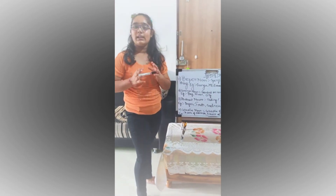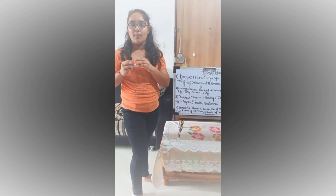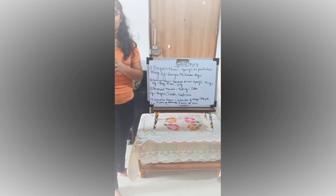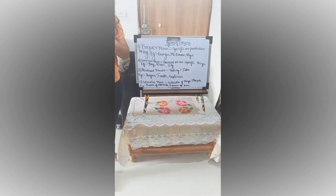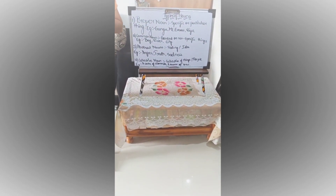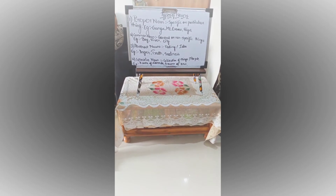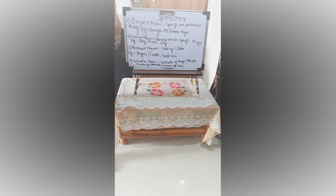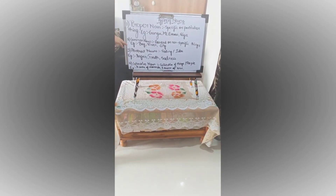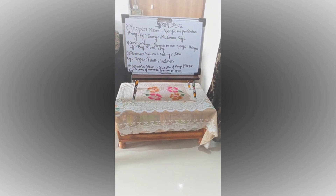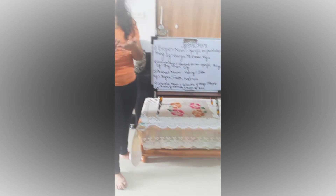Next we'll look at common nouns. A common noun is just the opposite of a proper noun. They do not speak in particular but refer to a general or non-specific thing. Example: boy, river or city — we can have any boy, any river or any city.